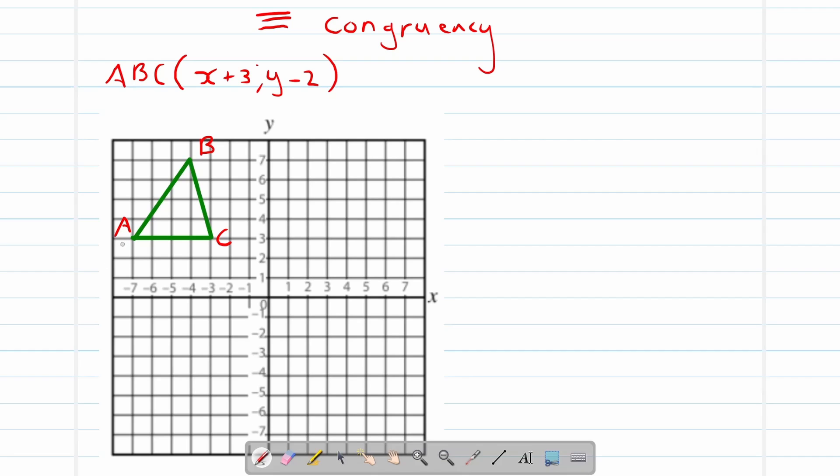Now for me personally, it's the easiest to work with one coordinate and then just apply the same changes to the other coordinate. So A's current coordinate is negative 7, remember it's first the x then the y, then the y is 3. B's current coordinate is at negative 4 and 7. C's current coordinate is at negative 3 and 3.